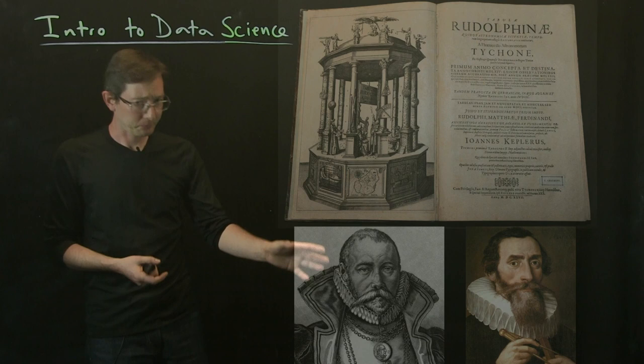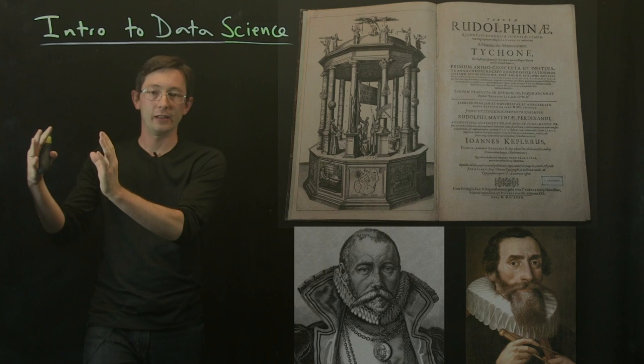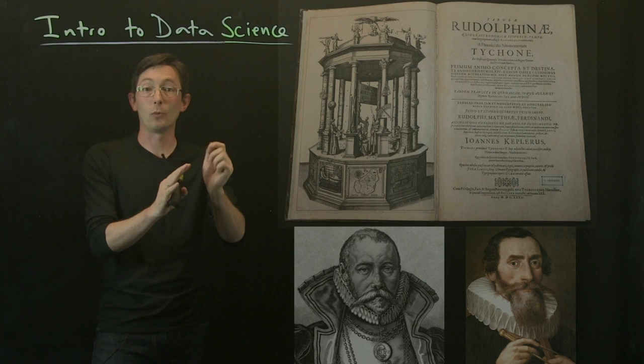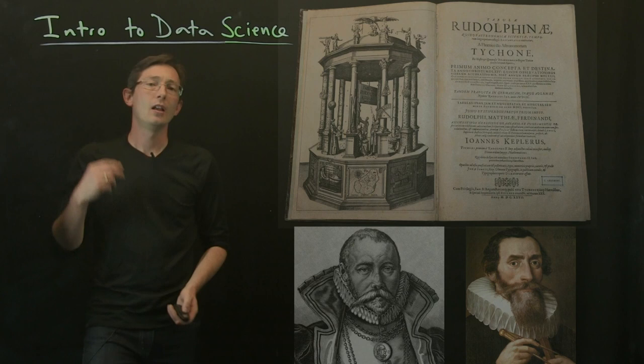To some extent, Tycho Brahe noticed inconsistencies between the models of the time and what he observed. There was this predicted conjunction of planets that didn't agree with the models to his satisfaction. He realized, I think as a teenager, that he needed to collect rigorous, clean data.